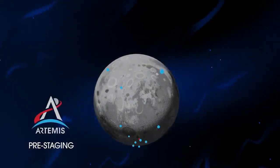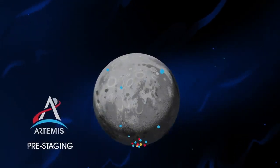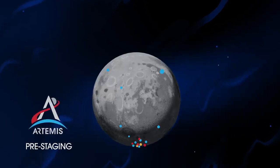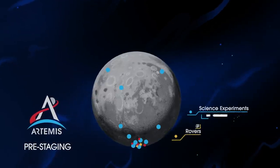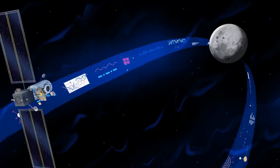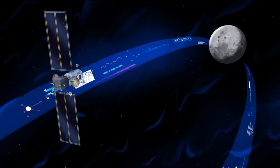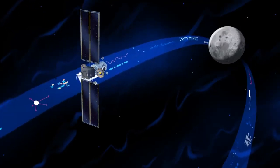Everything needed for lunar missions will be positioned in advance by commercial and international partners. This includes rovers, science experiments, and human-rated systems on the surface. But it also includes a dedicated lunar station in orbit around the Moon called Gateway.